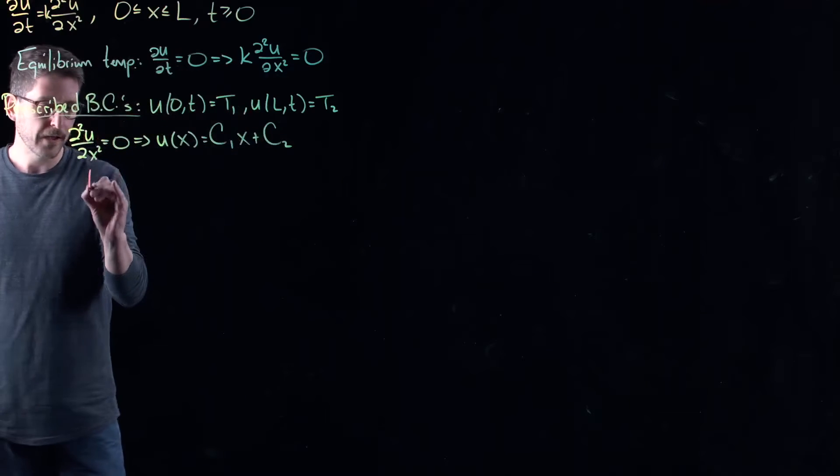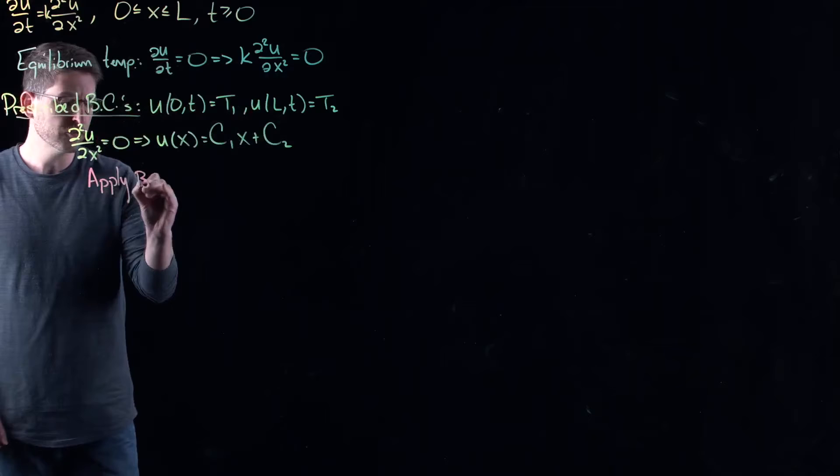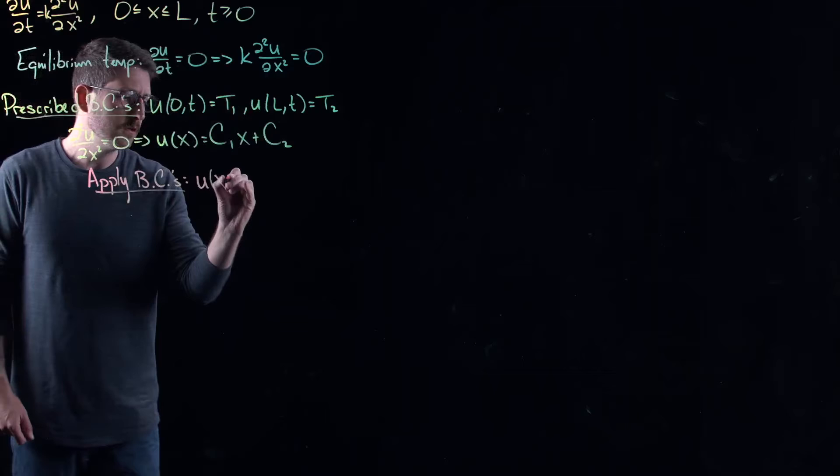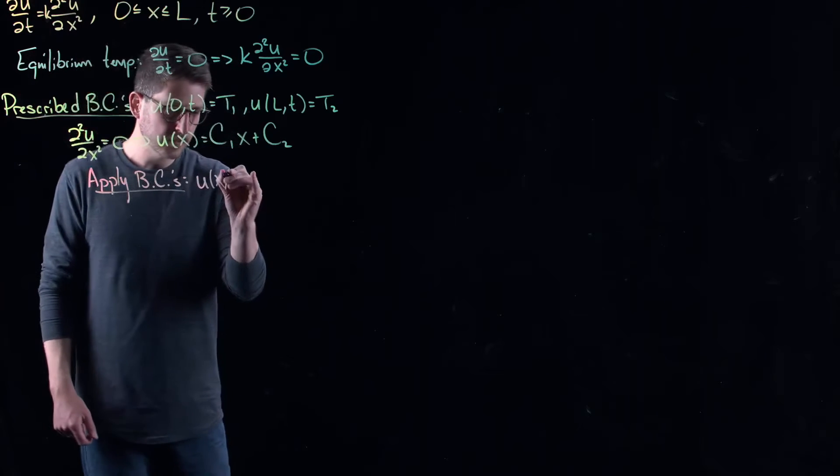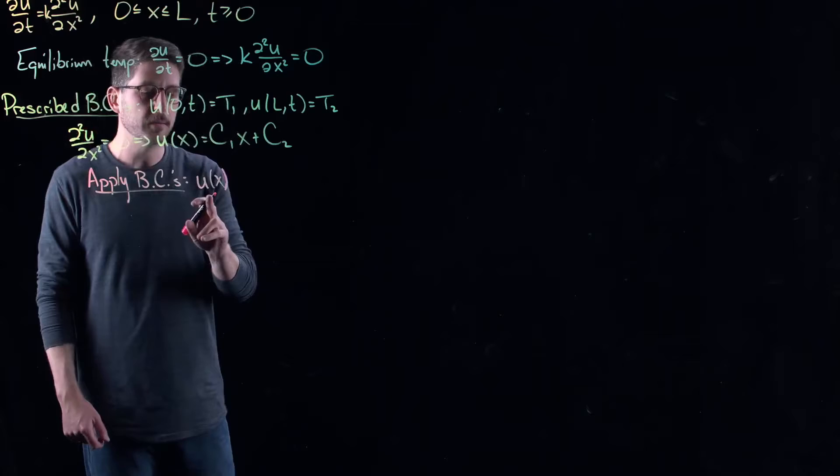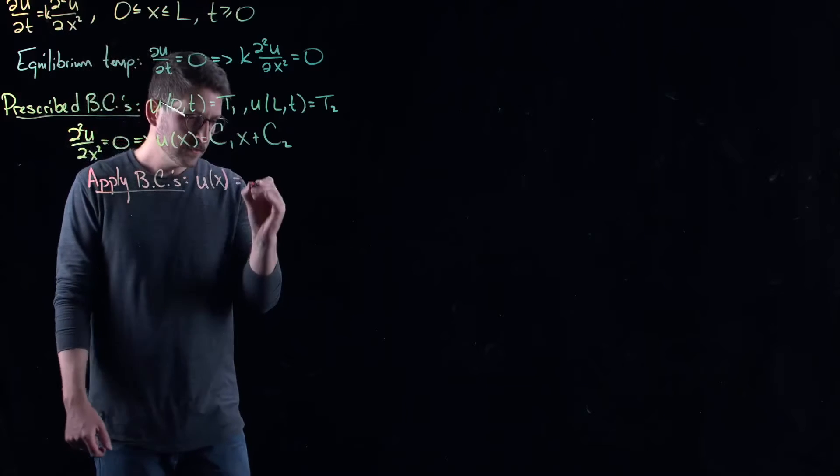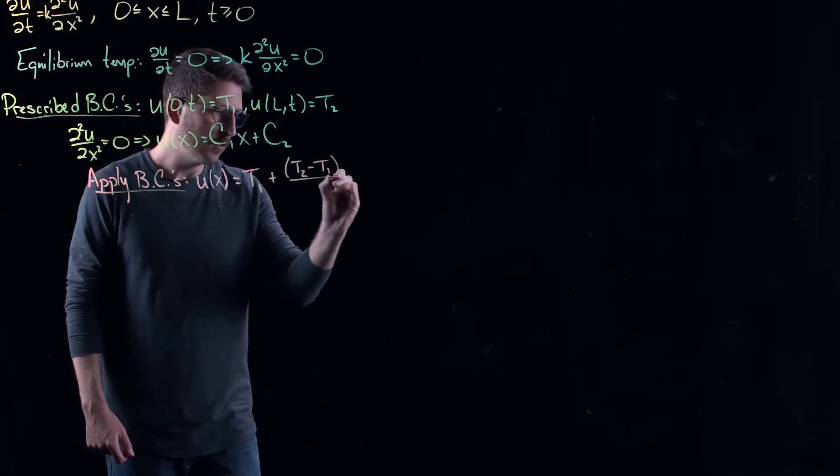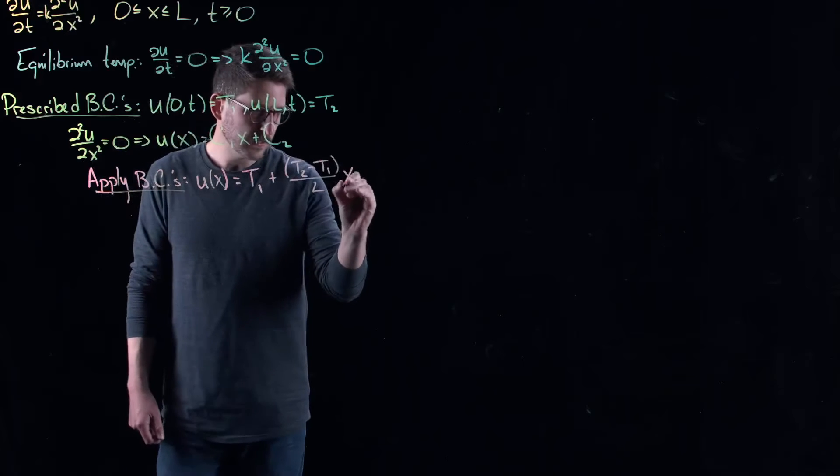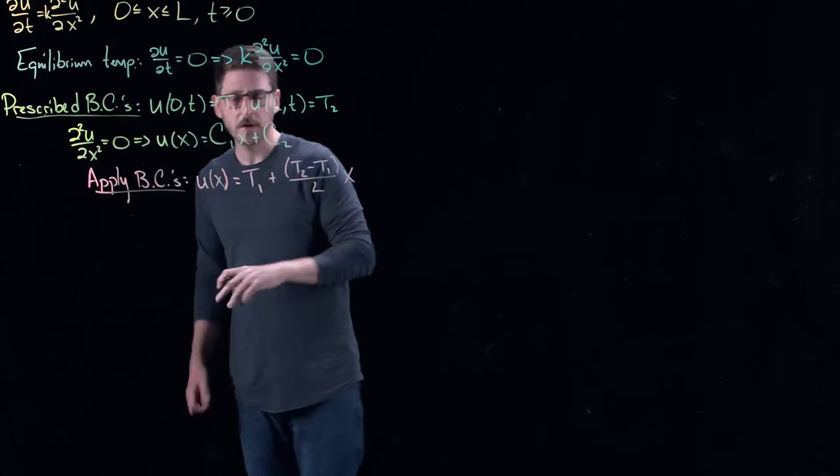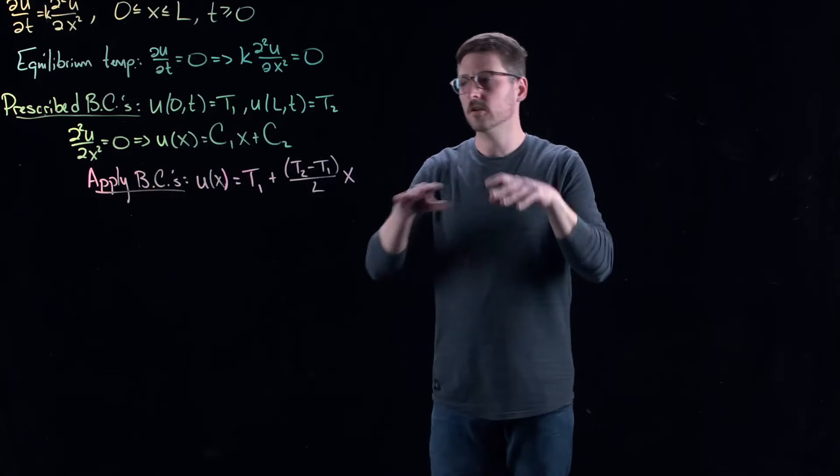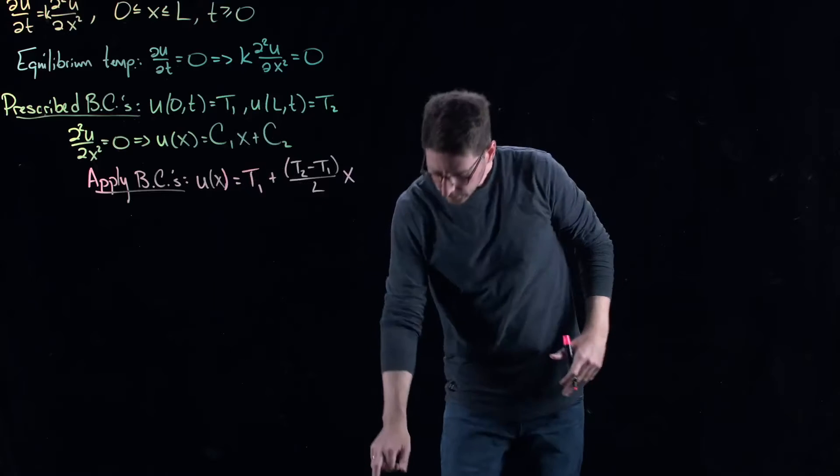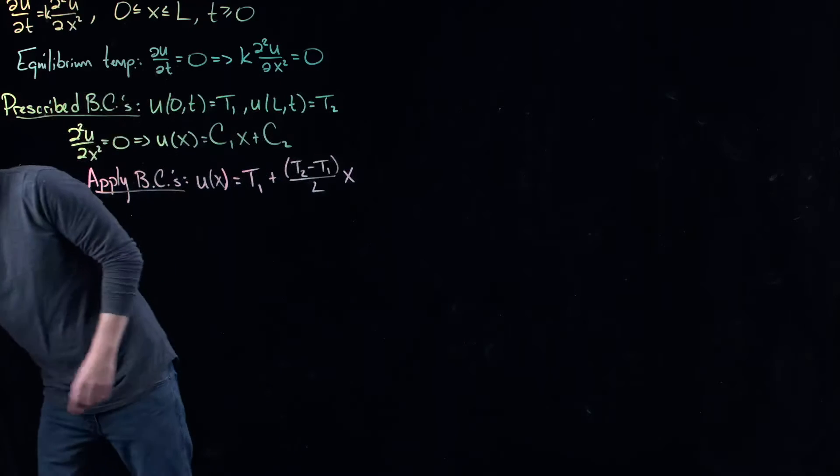So after you apply the boundary conditions here, you get a specific solution, which no longer depends on T. It's the equilibrium temperature, which is going to be T1 plus T2 minus T1 over L times x. So it's just a constant solution that stretches across the rod from T1 at the left point to T2 at the right point. Nothing too fancy.